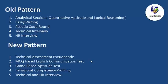The new pattern is going to have five rounds. The first will be a technical assessment — specifically a pseudo code round. The second will be an MCQ-based English communication test. The third will be a game-based aptitude test. The fourth will be behavioral competency profiling. And the last would be technical and HR interview. Notably, the analytical section with quantitative aptitude and logical reasoning has been eliminated, essay writing has been replaced by the MCQ English test, and the pseudo code round has moved to first position.